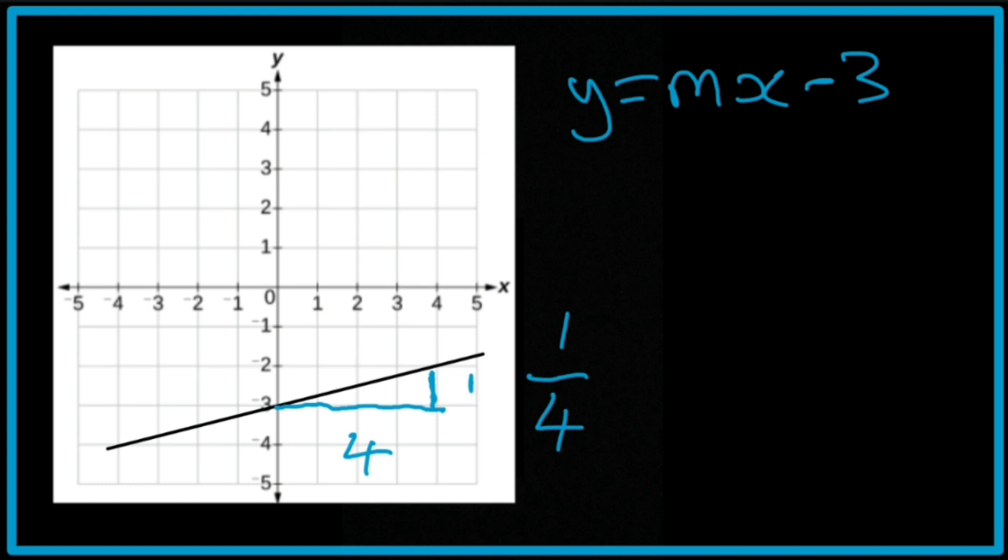You can convert it to a decimal as well, but I usually leave it as a fraction. So it's going to be y equals 1 over 4x minus 3. And that's the final answer for this one.